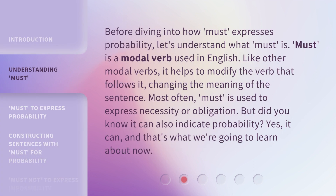Before diving into how 'must' expresses probability, let's understand what 'must' is. 'Must' is a modal verb used in English. Like other modal verbs, it helps to modify the verb that follows it, changing the meaning of the sentence. Most often, 'must' is used to express necessity or obligation. But did you know it can also indicate probability? Yes, it can, and that's what we're going to learn about now.